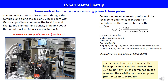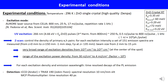The density of created electron pairs in the laser spot center can be controlled from 10^16 to 10^22 per centimeter cubed by the combination of Z-scan and the variation of the laser power from 0.5 nanojoule to 800 nanojoule per pulse. The experimental conditions are summarized and specified here.